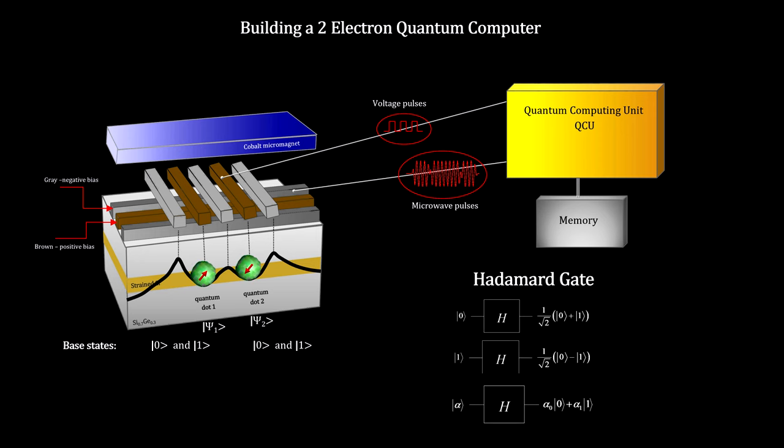The Hadamard gate is one of the most important operations. It takes a single qubit in a base state as input and outputs a qubit in a superposition state with equal coefficients.